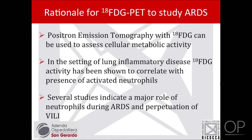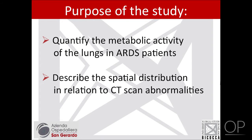These were the premises and rationale for our study: that FDG PET can be used to assess metabolic activity in the cells, and that in the setting of lung inflammation, this metabolic activity can usually be ascribed to inflammatory cells. We know there is a major role of neutrophils in the onset, generation, and perpetuation of ARDS and ventilator-induced lung injury. So we went with this study, which had some straightforward goals: to establish the metabolic activity of the lungs — or if you will, the inflammation — in patients with ARDS, and to describe its distribution in space in correlation with the corresponding CT scans.